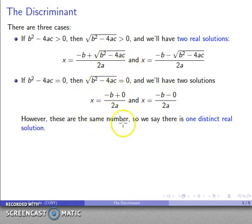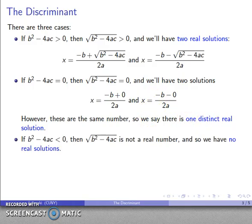And so while there are two solutions, they happen to be the same thing. And so we say there's one distinct real solution. And then finally, if b squared minus 4ac is negative, this isn't a real number. And so I have no real solutions.